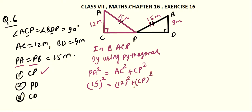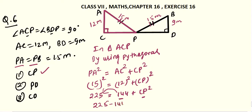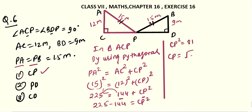We have to find CP. So for that, you have to transpose 144 to the left hand side. So 225 minus 144 equals CP squared. And finally CP squared equals 81. So CP equals under root 81. As you know, 81 is a perfect square of 9. So you will write CP equals 9 meters. So we got our answer: value of CP is 9 meters.